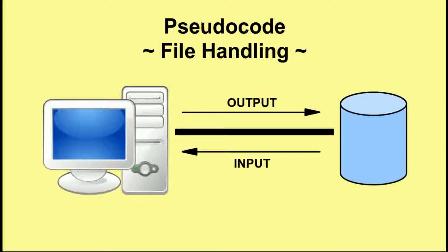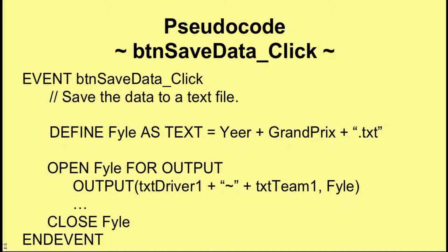Now let's look at the code for button save data click. We start with a comment: 'save the data to a text file.' We define a variable called 'file' — misspelt because 'file' is a reserved word in most languages. The value of file is: year plus the Grand Prix name plus '.txt'. So if the user had entered 2011 and Monaco, the file name would be '2011.monaco.txt'. That's the name of the file, and now we can get on to the file handling.